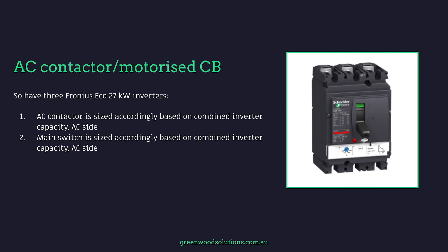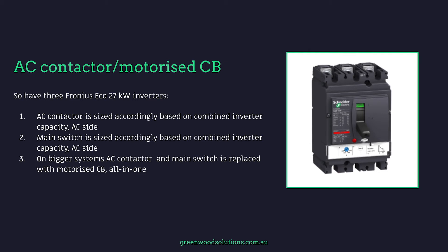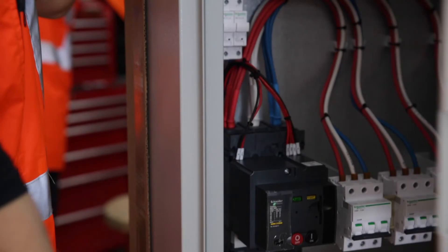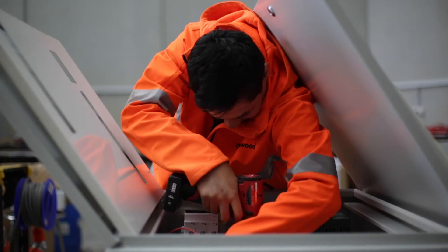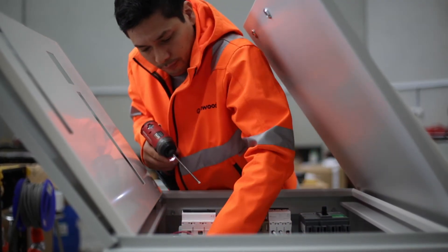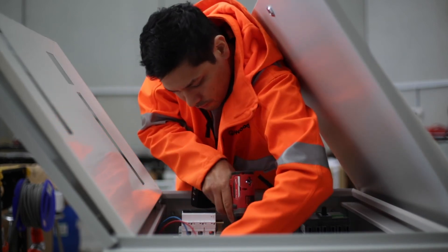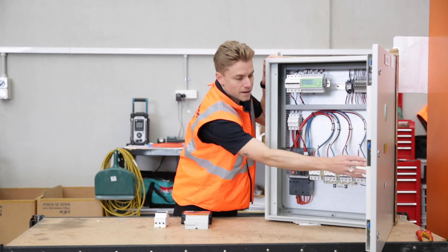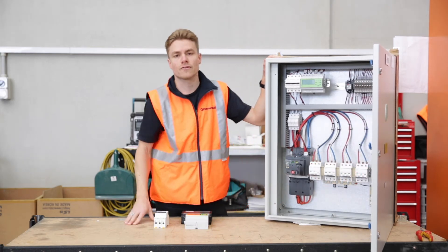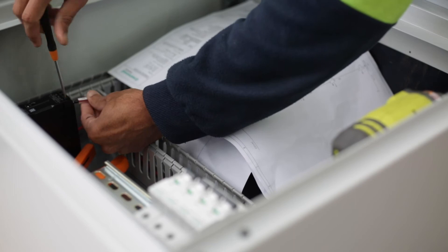The main switch is also sized accordingly based on combined inverter capacity on the AC side. On bigger systems, the AC contactor and main switch is replaced with a motorized circuit breaker — an all-in-one approach. In our case with our GridSafe GS100, we've incorporated the AC contactor and the main switch into one unit, using a 160 amp motorized circuit breaker. This means fewer components inside the board, which allows the installer more room for cabling and taking into consideration bending cable radiuses.